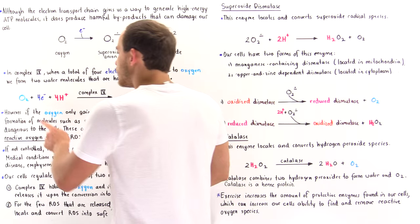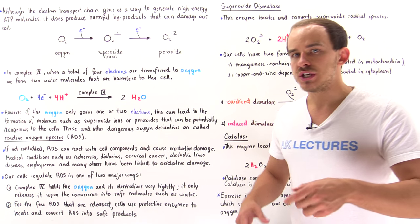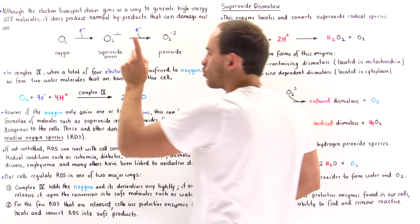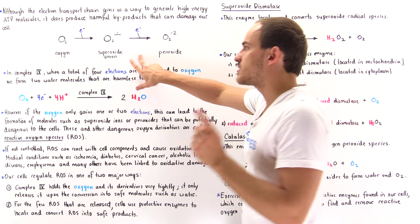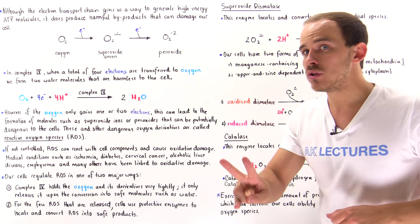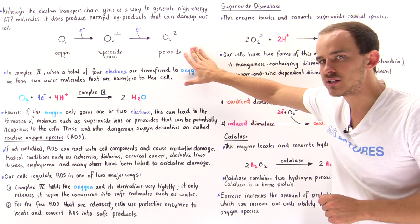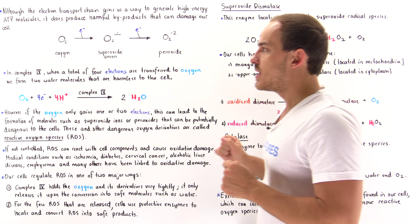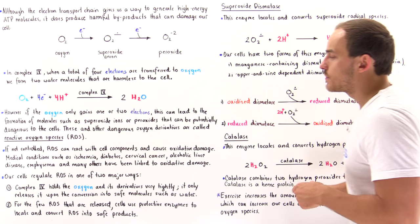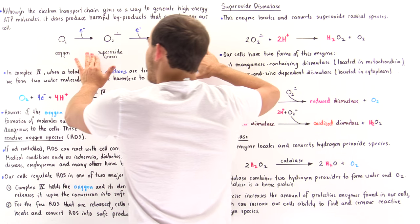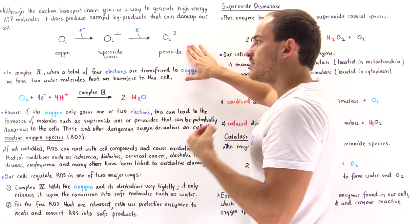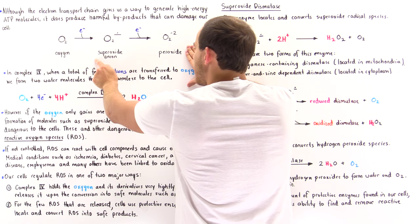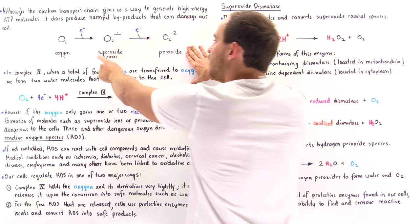Under certain conditions, oxygen is only partially reduced. If oxygen gains only one electron, we form a radical molecule known as the superoxide anion. If it accepts two electrons, we form the peroxide molecule — in fact, when we discussed Complex IV, we noted that a peroxide bridge is formed between the copper B atom and the heme A3 group. These two types of molecules are very reactive, and if Complex IV releases either of them, they can cause damage to cell components because of their reactivity.